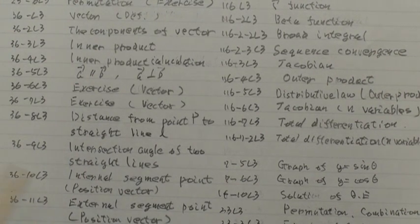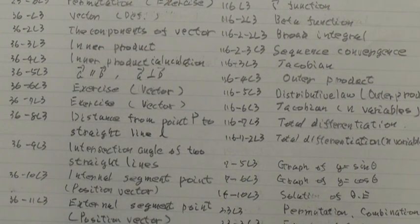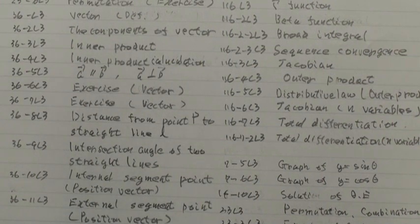36 branch 10L3, Internal Segment Point, Position Vector.